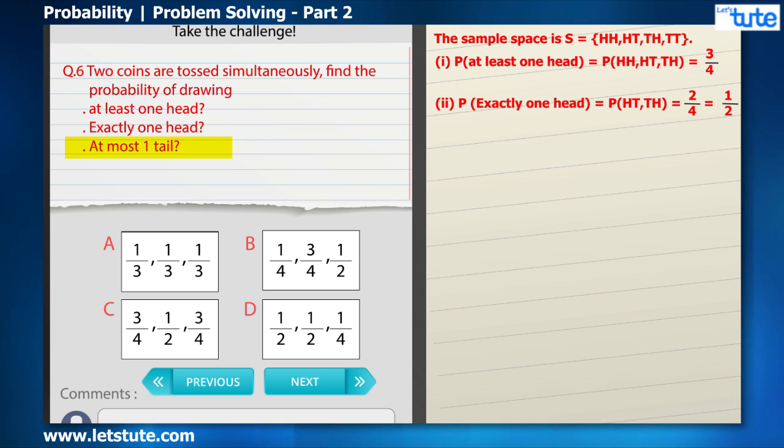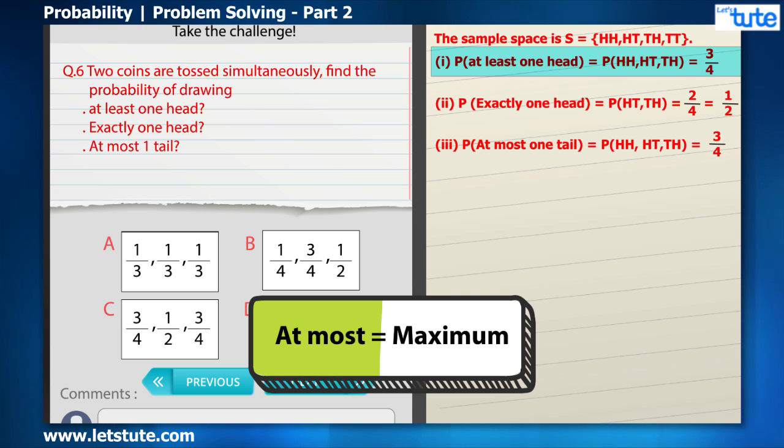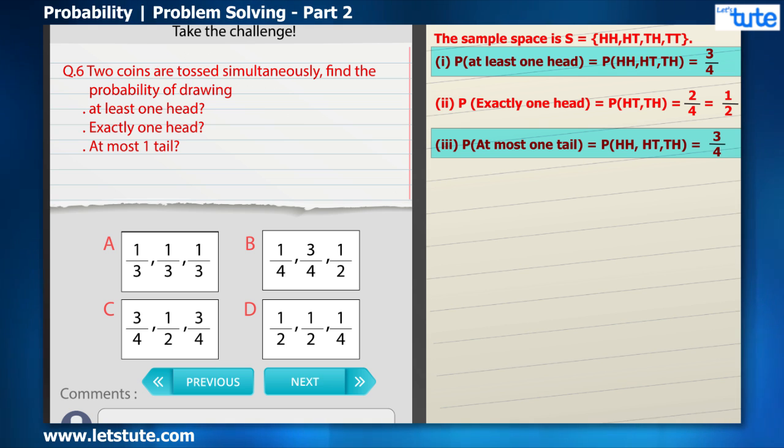Now the third part of the question asks for at most one tail. When the question says 'at most,' it means that it should have maximum one tail, even if it is lesser, which means zero, that will also be okay, but maximum it should have only one tail. So the probabilities that we can choose from the sample space will be HH, HT, and TH, which comes to 3 by 4 again. Now here we can see that the probability of getting at least one head and the probability of getting at most one tail are the same, isn't it?